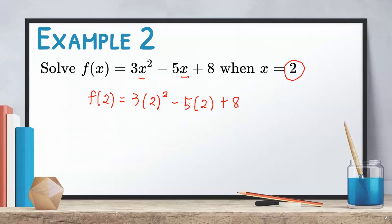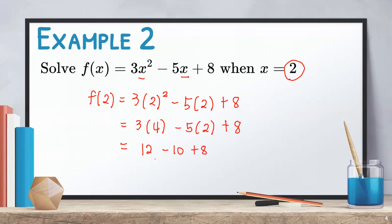In this equation, we need to evaluate first the exponent. Hence, we will have 3 times 4 minus 5 times 2 plus 8. So, that will give us 12 minus 10 plus 8. From here, we need to simplify 12 minus 10 plus 8, which will give us 10. Therefore, f of 2 is equal to 10.